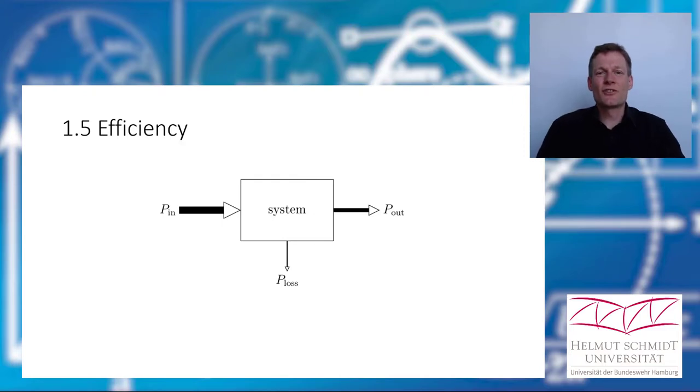A last definition for today. When we have a system, that could be a motor, an electrical motor for example, then we put power into it. This would be electric power. And we have an output power on the other side, mechanical power of a motor. This mechanical power will be not as big as the input power because we have losses. A motor produces also heat and we are not interested in that heat, so we have a loss. Therefore, I introduce here p_loss.